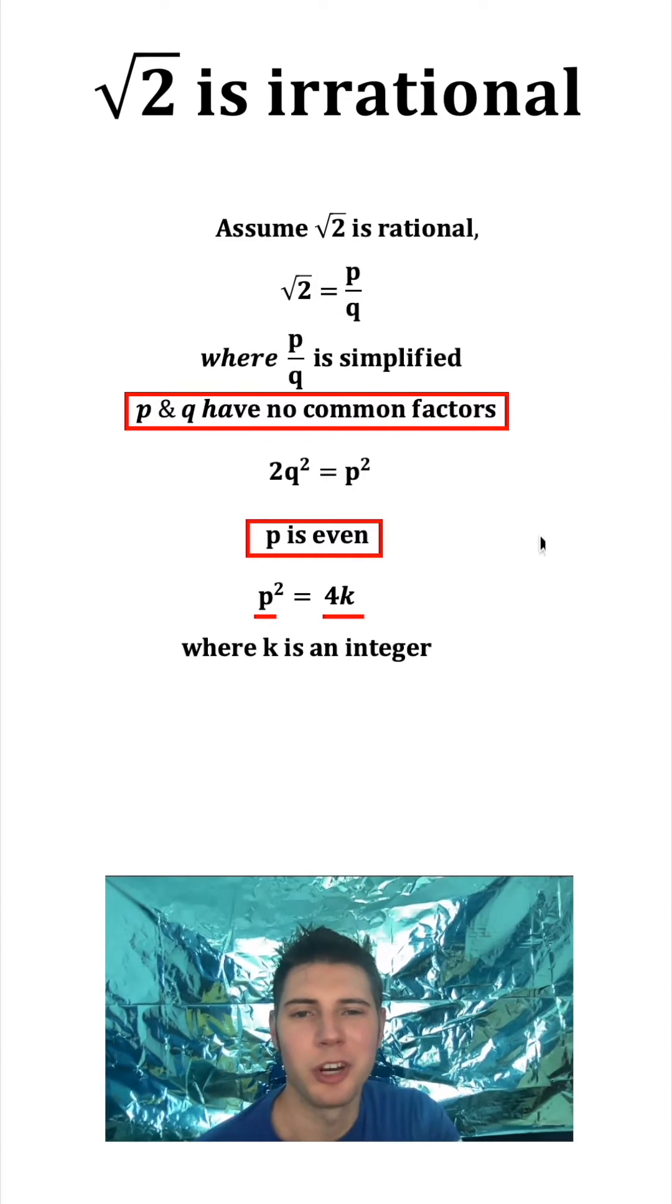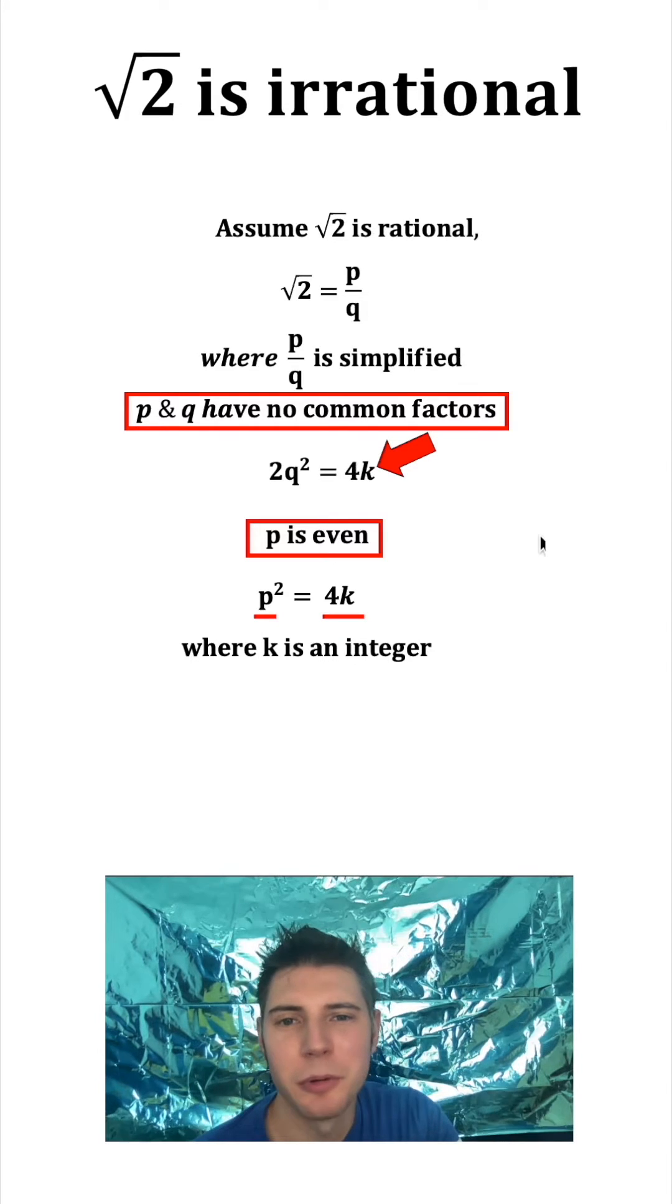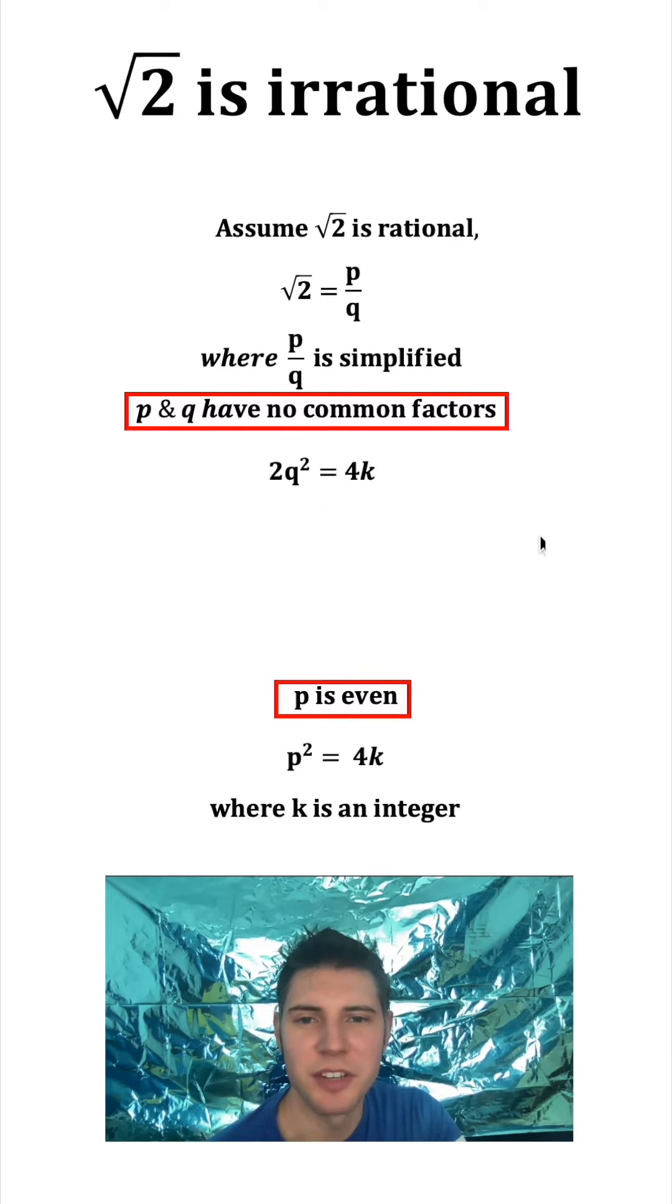Now, since P squared is equal to 4K, and this is a P squared up here, we can replace that with 4K. Let's move this stuff down.